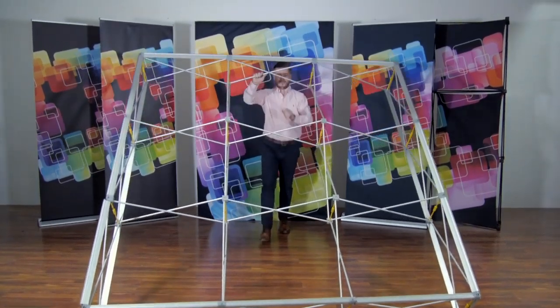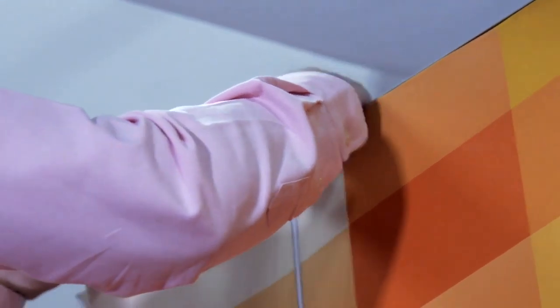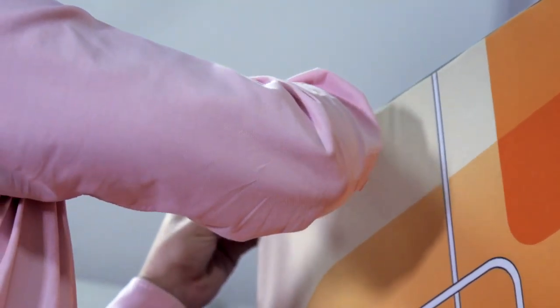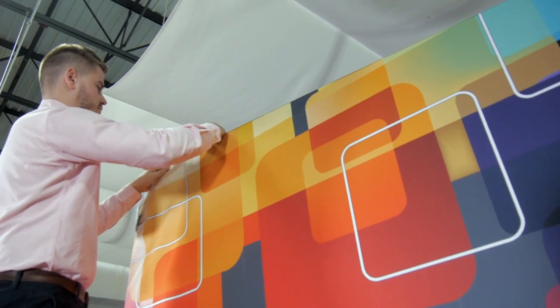Stand the frame up and begin inserting the silicone edge beaded graphic into the channel bars. Finish by folding the graphic over the end caps and work the silicone edge down the channel bar.